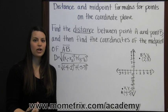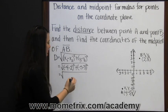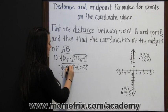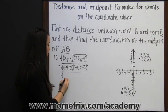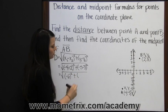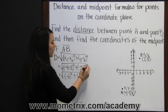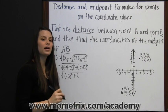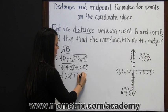Now we simplify following the rules of PEMDAS, starting inside the parentheses. Negative 4 minus 2 — adding the inverse gives negative 4 plus negative 2, which is negative 6, squared. For the second set, negative 5 minus 3, or negative 5 plus negative 3, which is negative 8, squared.